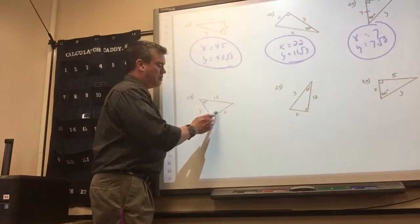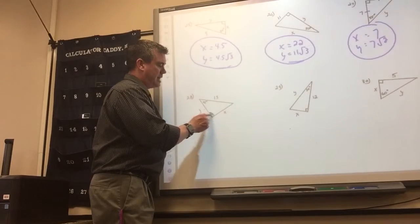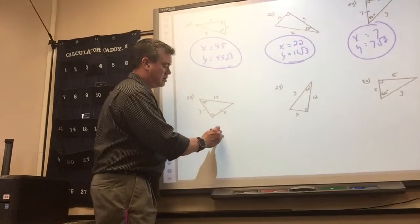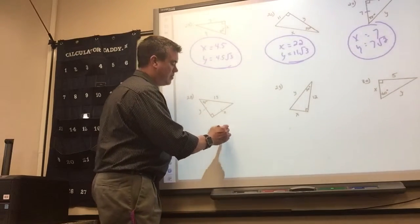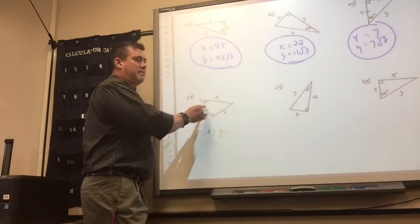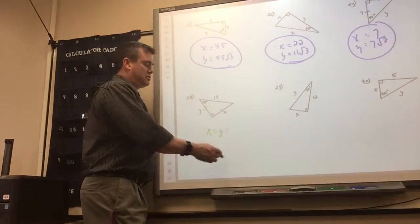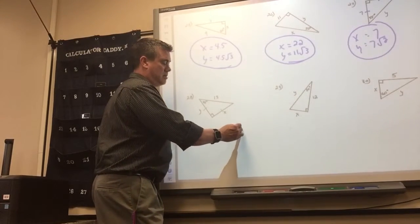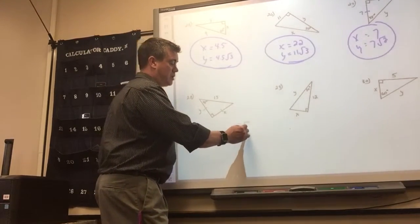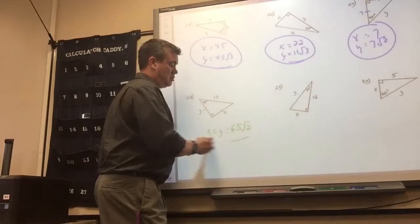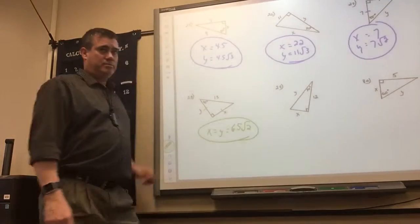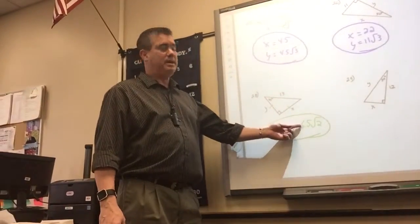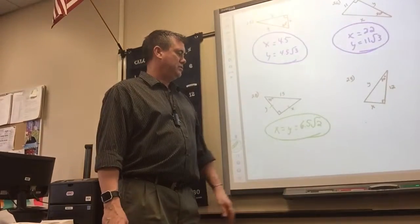Problem 26: 30-60-90 — we know the short leg. The hypotenuse is double the short leg, and the long leg is the short leg times the square root of 3. Problem 27: 45-45-90 — the legs are equal, so x is 7. The hypotenuse is just the leg times the square root of 2. Problem 28: 45-45-90 — the legs are equal, and a leg is half the hypotenuse times the square root of 2. So it's half of 13, which is 6 and a half times the square root of 2.